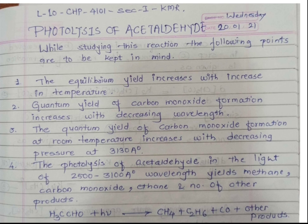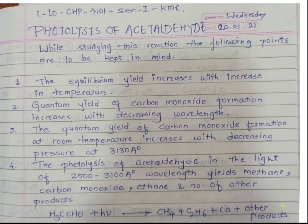The photolysis of acetaldehyde in the presence of light with wavelength 2500 to 3100 Angstroms produces methane, carbon monoxide, ethane, and a number of other products. So the overall reaction is: CH3CHO + hν → CH4 + C2H6 + CO + other products.